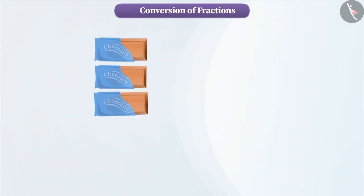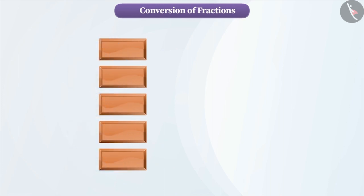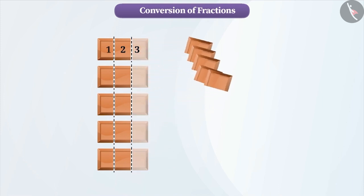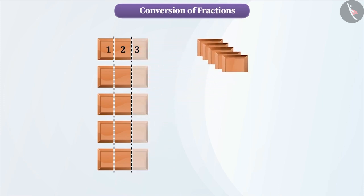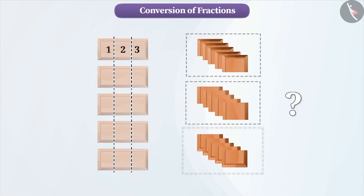Let's assume we have 5 chocolates. We have to divide them into 3 equal parts. In order to do so, we will divide each chocolate into 3 equal parts. Now, we will place each part of 1 chocolate as 1 group to make 3 equal parts of 5 chocolates. Now find how many chocolates will be there in each part.